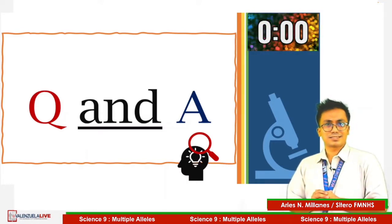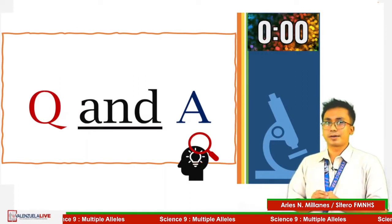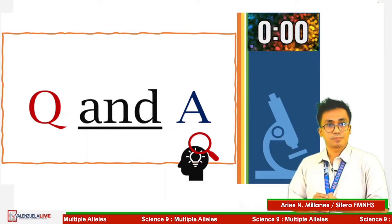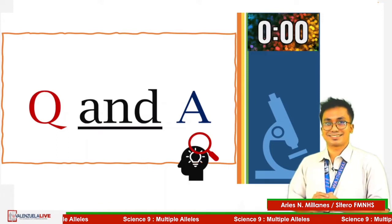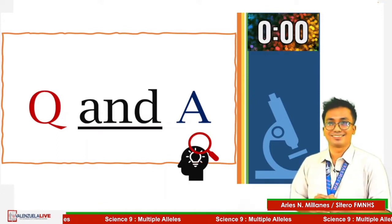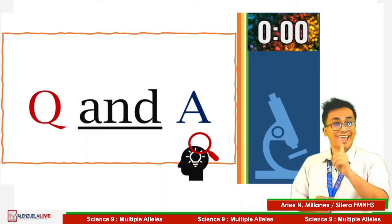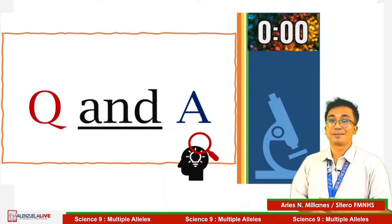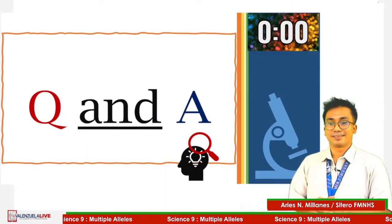Is it still possible to have blood type O if both parents are blood type A? The answer is yes. You are a legitimate child if both parents are heterozygous in their blood traits.